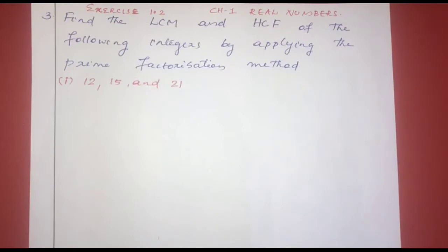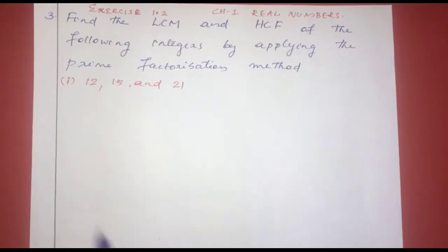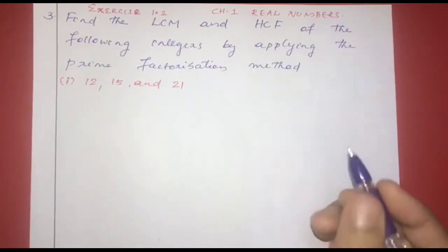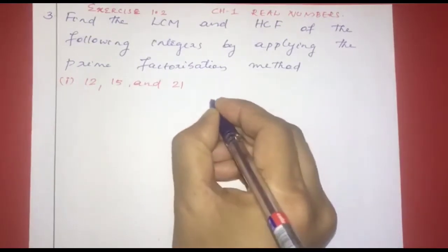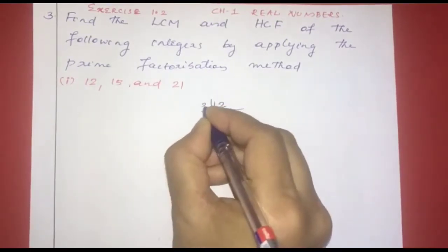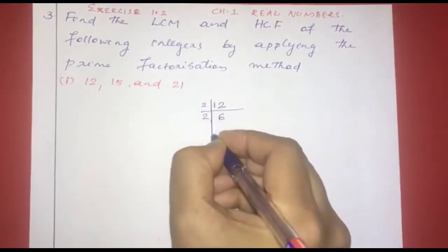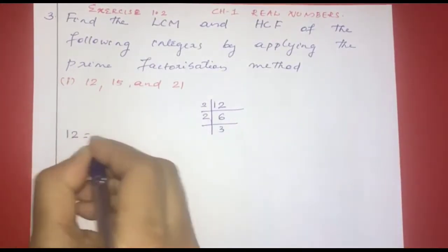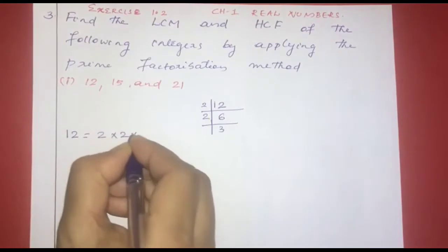XS1.2, Third question: Find the LCM and HCF of the following integers by applying the prime factorization method. First one: 12, 15, and 21. We will try to find the prime factors. For 12: 2 gives 6, 2 gives 3. So 12 is equal to 2 × 2 × 3.